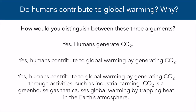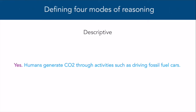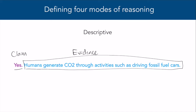In this video, we'll be looking at four distinct modes of reasoning, using the question about climate change to examine different arguments. The first mode is called descriptive reasoning. In descriptive reasoning, the claim and evidence are described, but there isn't a link — such as because or so — that describes the relationship between the two. An example: yes, humans generate CO2 through activities such as driving fossil fuel cars. Here, yes is the claim, and humans generating CO2 through driving fossil fuel cars is the evidence, but there's no linking word connecting them.